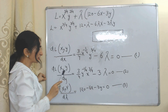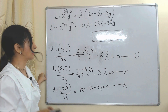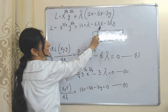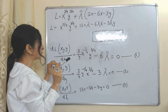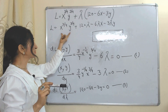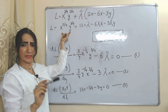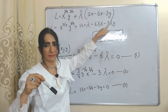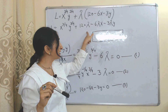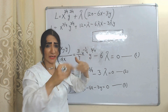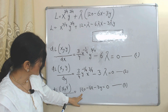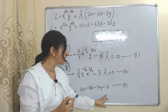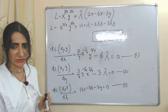Now we do the derivative with respect to lambda. Lambda is multiplied by the terms 120, 6x, and 3y in the budget constraint part. The utility function part has no lambda, so it becomes zero. When we differentiate with respect to lambda, lambda cancels out, and our equation becomes 120 minus 6x minus 3y. We set this equal to zero — this is our third equation.